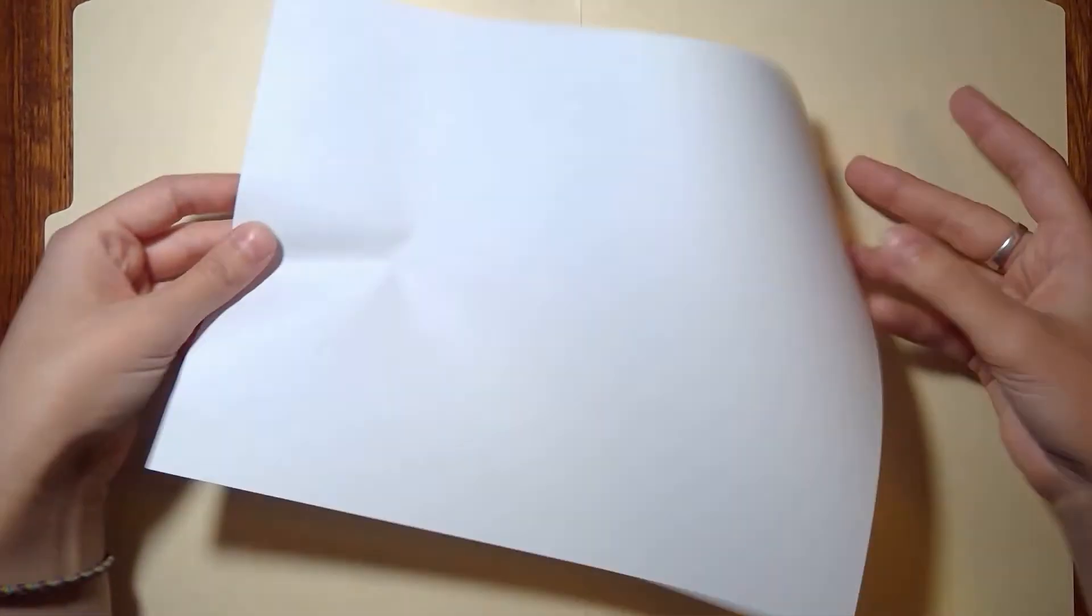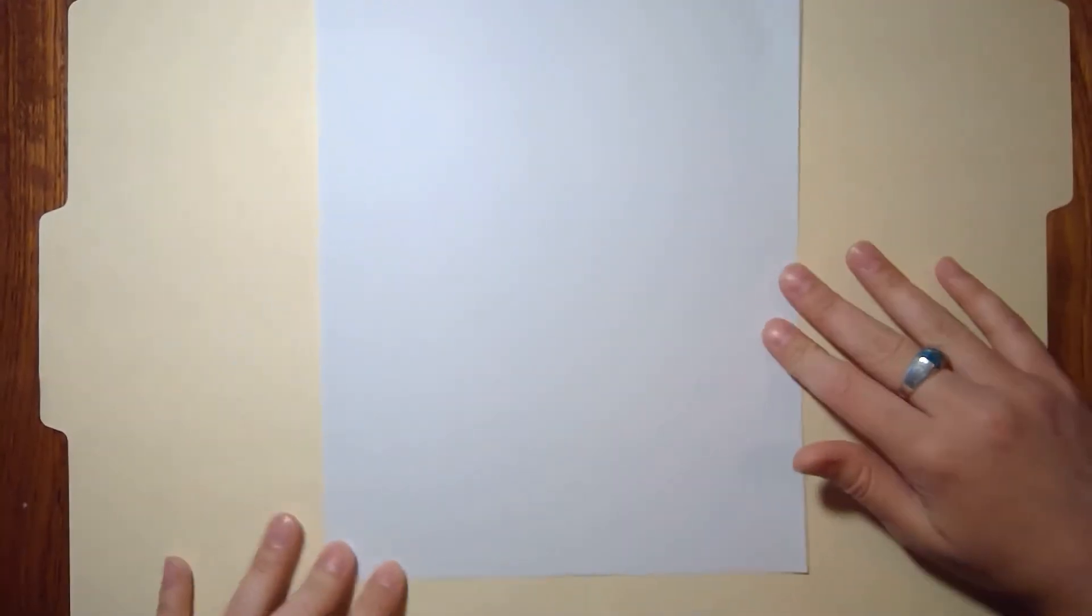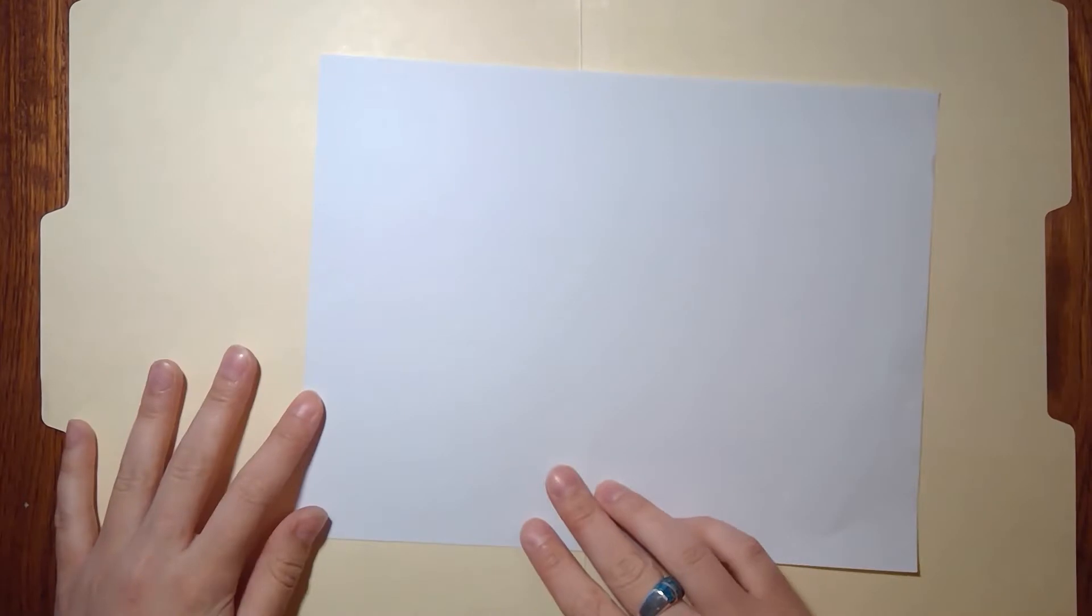First off, you're going to start with just a piece of paper. This is an origami fold which requires a square sheet of paper. If you ever need to make a square sheet of paper, I'm going to show you this simple little trick that saves some time.